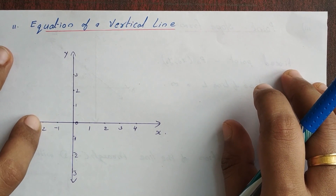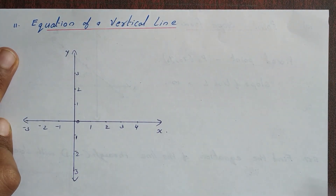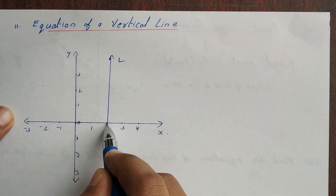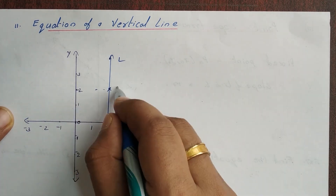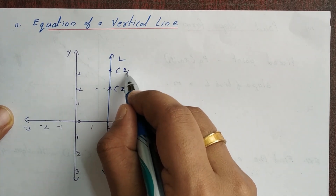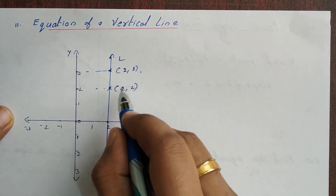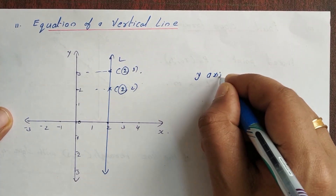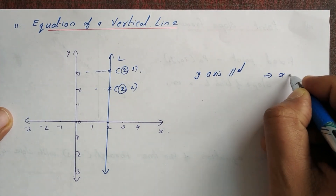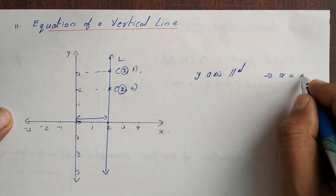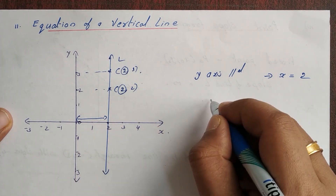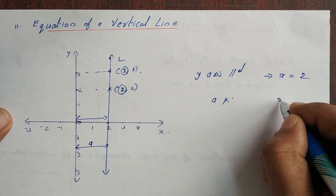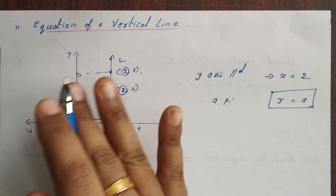Next is the vertical line. A vertical line is parallel to the y-axis. For a vertical line, x equals a constant value along the y-axis. The distance from the y-axis is a. So the equation of a vertical line parallel to the y-axis is x = a.